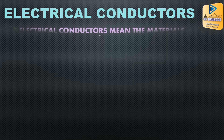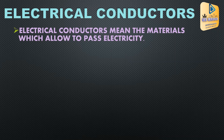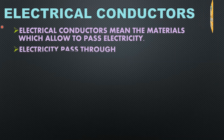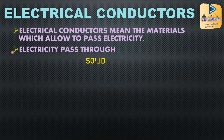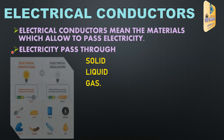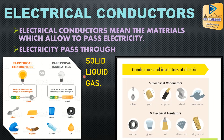First, we will discuss the Electric Conductor. The materials which allow electricity to pass are called Electric Conductors. Solid, liquid, and gas are the mediums through which electricity needs to pass. You can see the conductors and insulators — the materials which don't allow electricity to pass — in the following pictures.